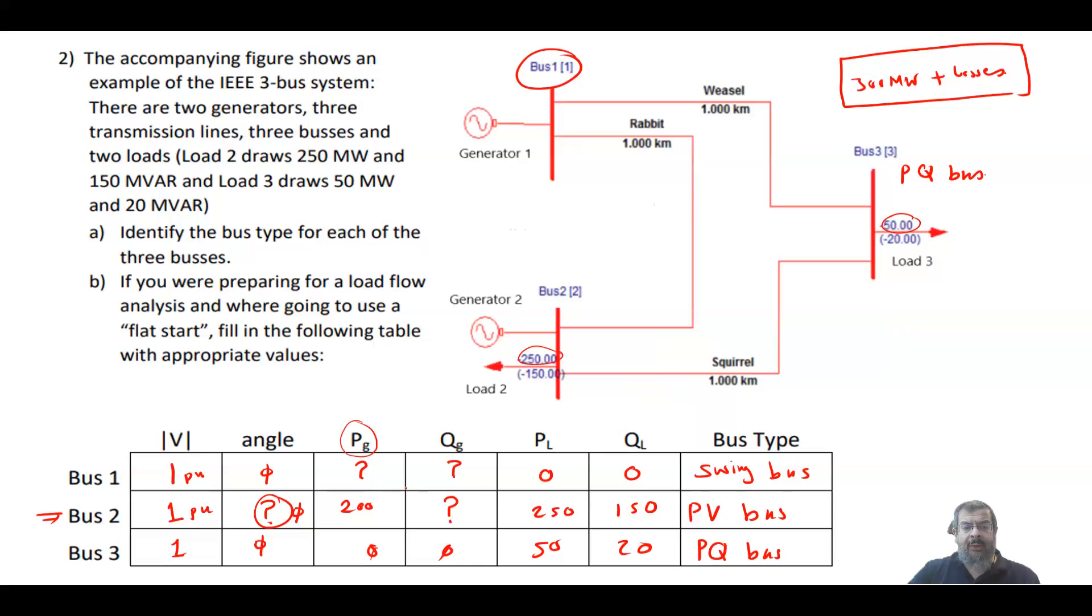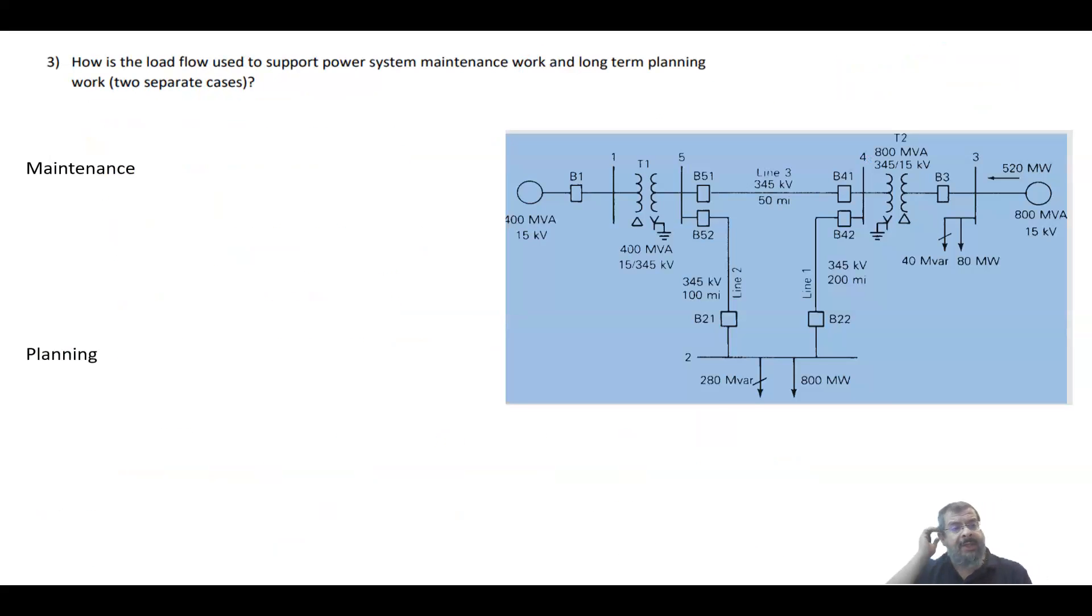PG and QG are zero and zero, and the PL is 50 and 20. These are the values when we start the iteration. Here PG and QG are unknown for the first bus, the angle is unknown for the PV bus but we assume it zero, and the QG we need to calculate it as we do the iteration. The second question says how is the load flow used to support power system maintenance work and long-term planning work.